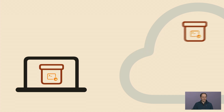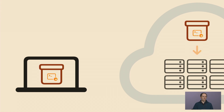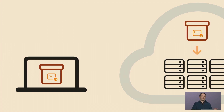Once we have an image, we can publish it to an image store in the cloud called a registry. You've heard of Docker Hub, but your favorite cloud provider or source code hosting site probably also runs a registry of its own. And the beauty of publishing a container image is that once it's in the registry, we can deploy it on any container-based cloud infrastructure we like, whether that's in the public cloud or in a private data center.